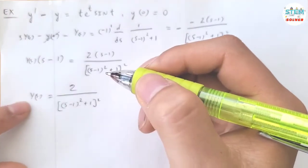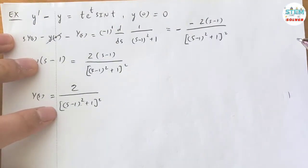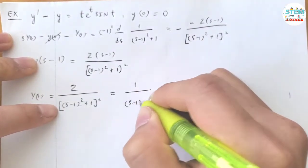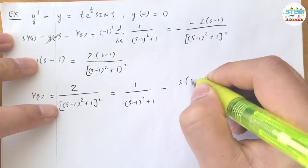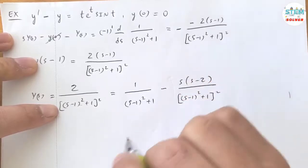Now the next step is to find the derivative of this one. So I'm going to use partial fractions. So this can be written as 1 over s minus 1 square plus 1 minus s times s minus 2 over s minus 1 square plus 1 square.